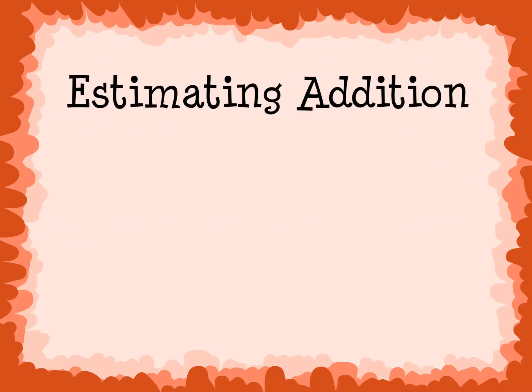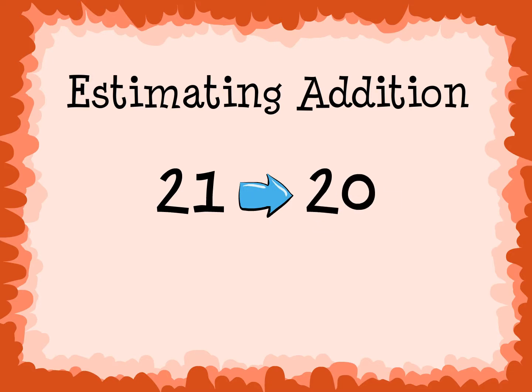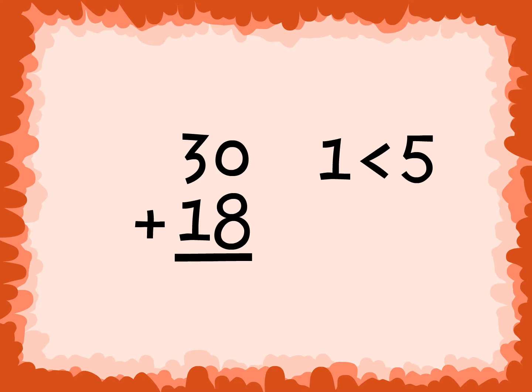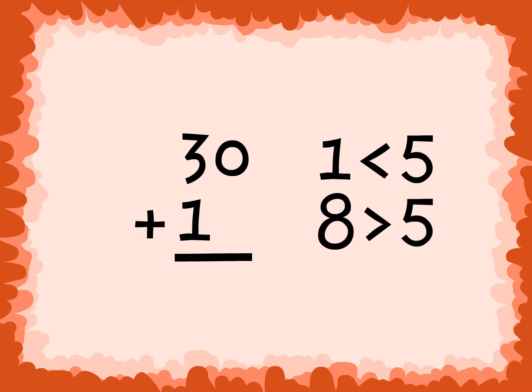Estimating Addition: To estimate a 2-digit addition problem, we find the closest 10 for each number in the problem. For example, 31 plus 18: 31 is closest to 30, because 1 is less than 5, so we round down. And 18 is closest to 20, because 8 is greater than 5, so we round up.